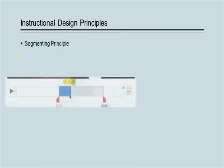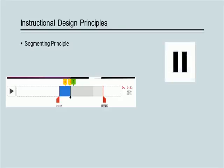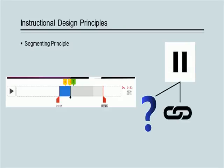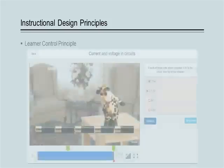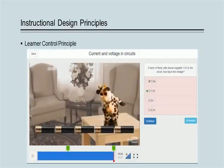This tool allows you to crop the video so that students only have to view the information that is directly related to their learning goals. You can follow the segmenting principle by pausing the video at key points and posing questions, providing hyperlinks to further information or additional images or diagrams. This ability gives students control over the pacing of the lesson, following the learner control principle and being allowed to repeat where necessary.